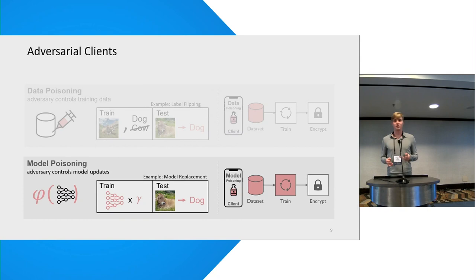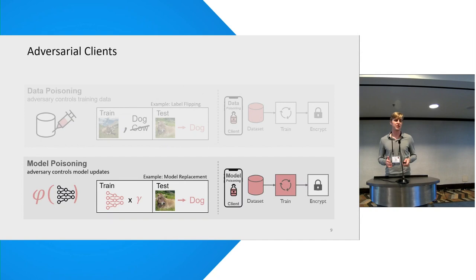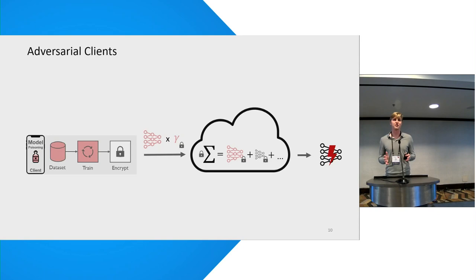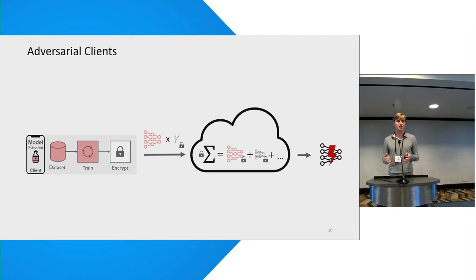In federated learning, adversaries are not limited to data poisoning because clients have direct access to model parameters, which allows them to perform stronger and more adaptive forms of attacks. In model poisoning, the adversary can craft an arbitrary malicious update, for instance using a custom training function for some malicious objective. Model poisoning is a very severe and practical attack because it allows a single compromised client in a single round to fully overtake the training process. These attacks exploit the linear aggregation process by scaling their update with a scaling factor to amplify it and overpower other clients' contributions.